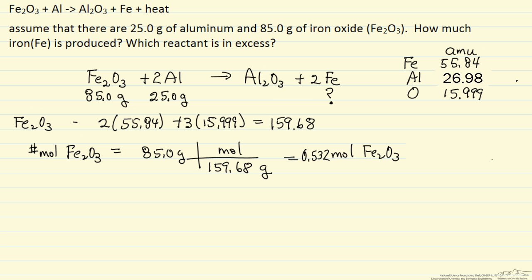Let's calculate the number of moles of aluminum. We have 25.0 grams, and if we look up in the periodic table, the molecular mass is 26.98 grams for one mole of aluminum. Calculating that, we get 0.927 moles of aluminum.